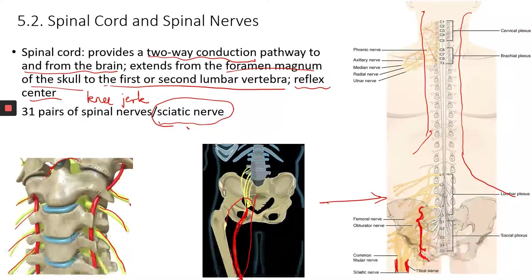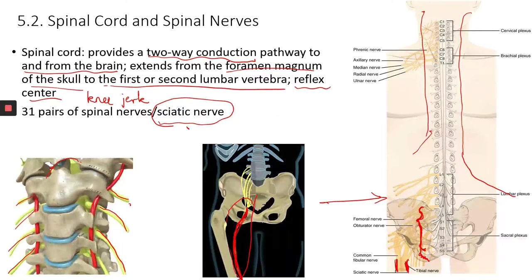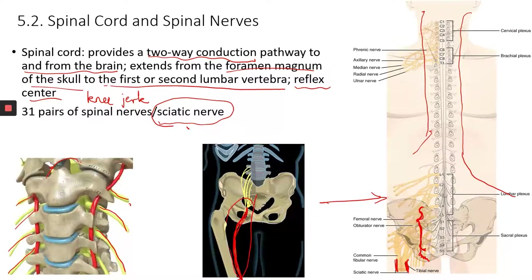If you have a herniated disc in your lower back, it could compress the sciatic nerve, causing pain in the lower back that shoots down through your entire leg.